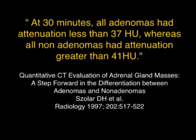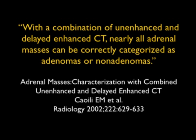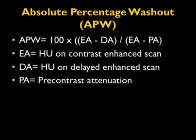The original articles by Soler made the point that when they waited 30 minutes, all adenomas were under 37 HU and non-adenomas over 41 HU. Kioli and the team at Michigan showed very high sensitivity and specificity — 96% of cases were identified. With a combination of unenhanced and delayed scans, nearly all adrenal masses can be correctly characterized as adenomas or non-adenomas. The protocol: look at density on non-contrast, then at 60 seconds, then at 15 minutes. If under 10 HU to begin with, it's an adenoma; if it washes out more than 50% by 15 minutes, it's also an adenoma.